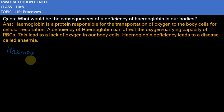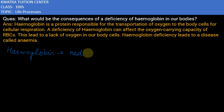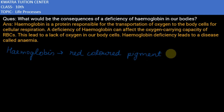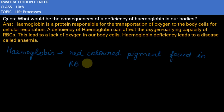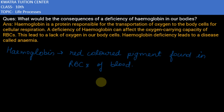What is hemoglobin? Hemoglobin is a red colored pigment found in red blood cells of the blood. Now let's talk about the function of hemoglobin.